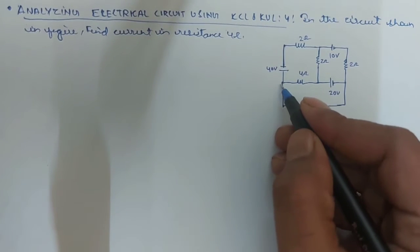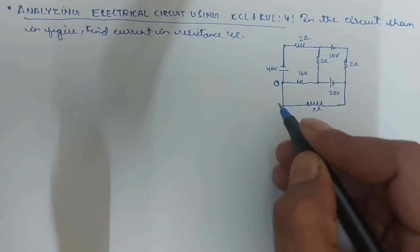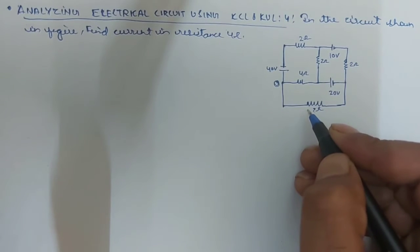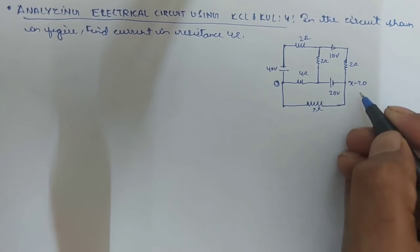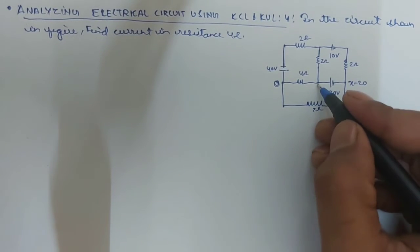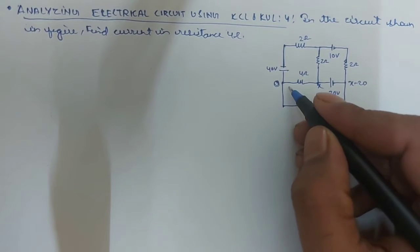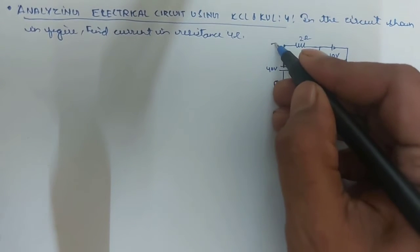Okay, can I take this as potential 0? If this is 0, then this will become what? x minus 20. If I take it as x, then 0, this will become minus 40.